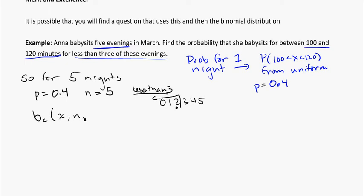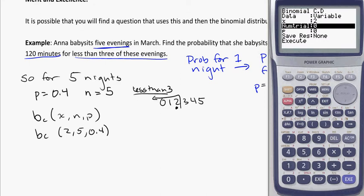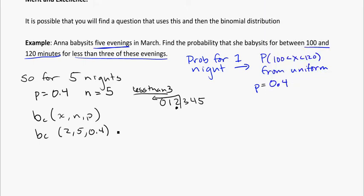BC is going to be, because we're going to use two out of five with a probability of 0.4. And if we do that into our binomial distribution, remember you want that on variable, and we've got two out of five with 0.4 as the probability. That's going to be equal to 0.6826. So that's our final answer there.